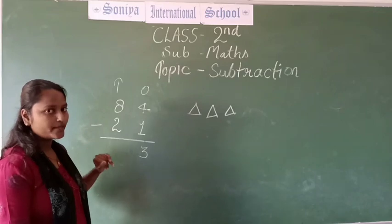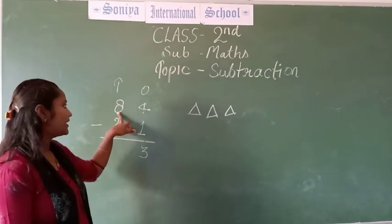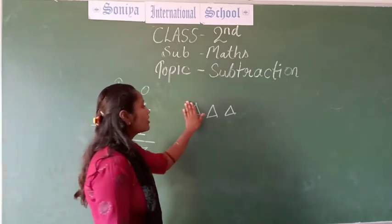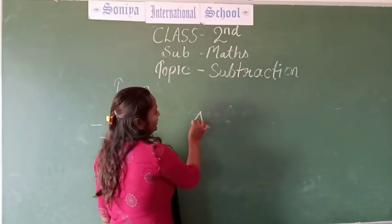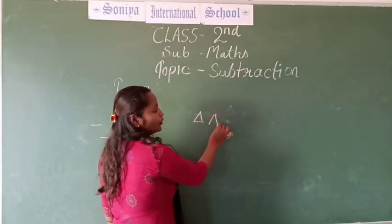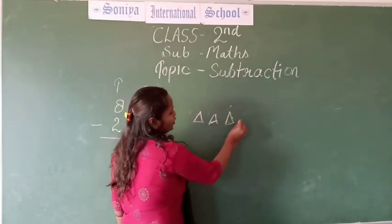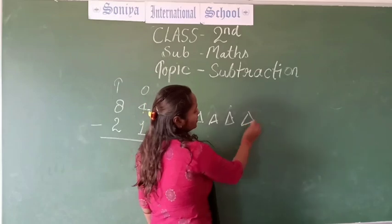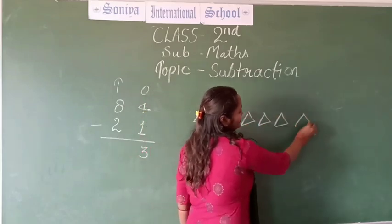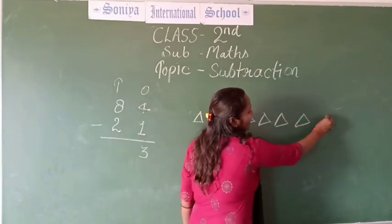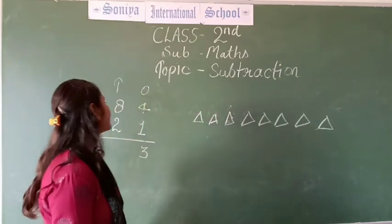Second, we are going to do the same process. What is this? This is 8. So we are making 8 triangles: 1, 2, 3, 4, 5, 6, 7 and 8. We are drawing 8 triangles.